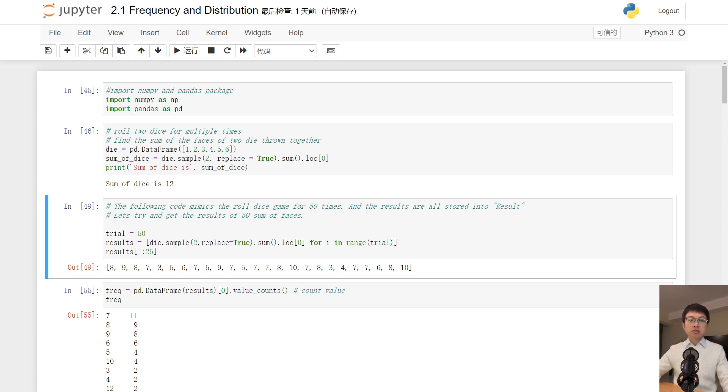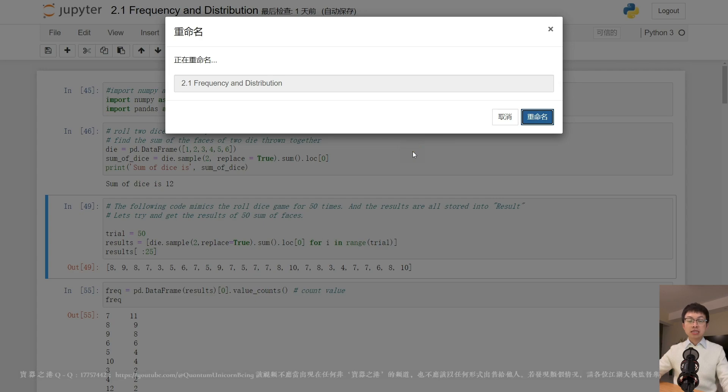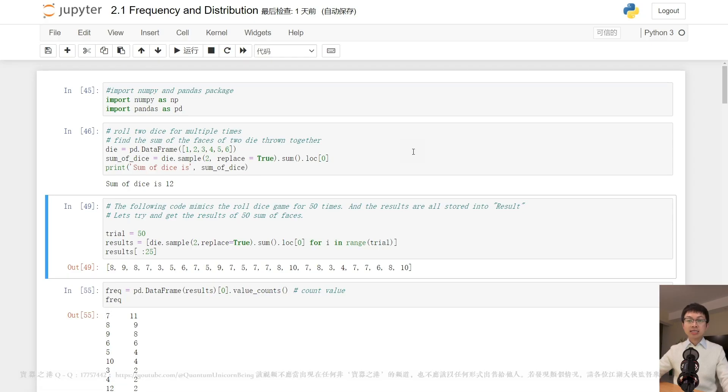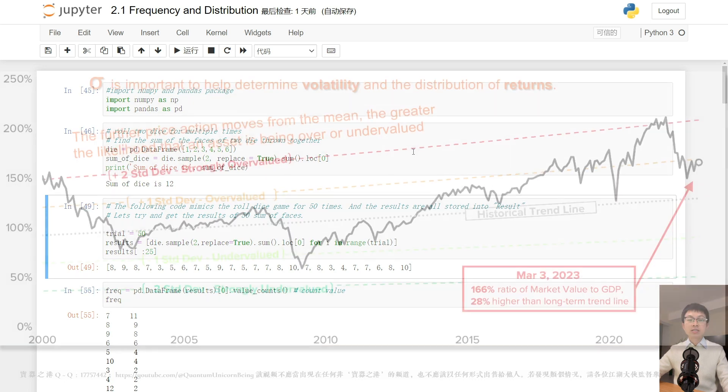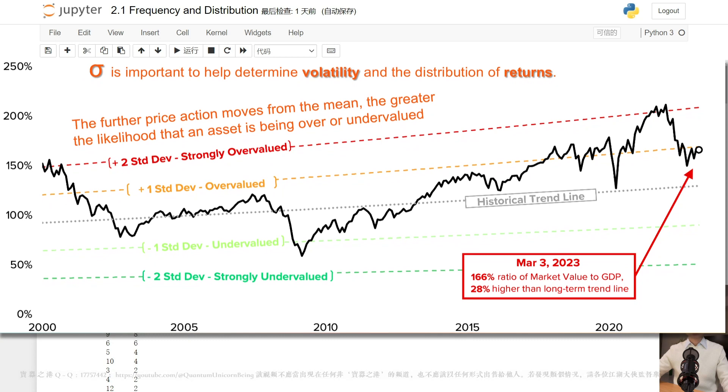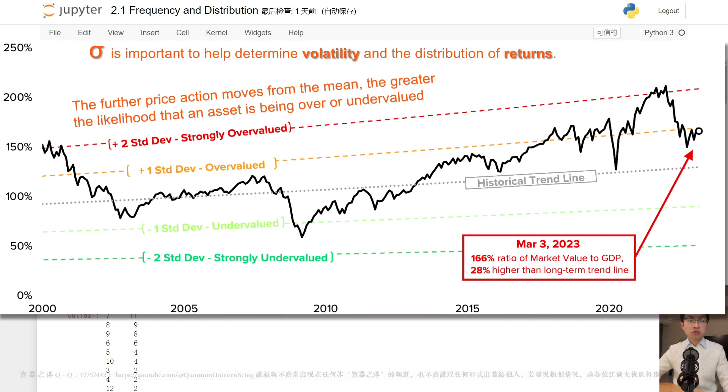The assumption of a normal distribution is applied to asset prices as well as price action. Traders may plot price points over time to fit recent price action into a normal distribution.